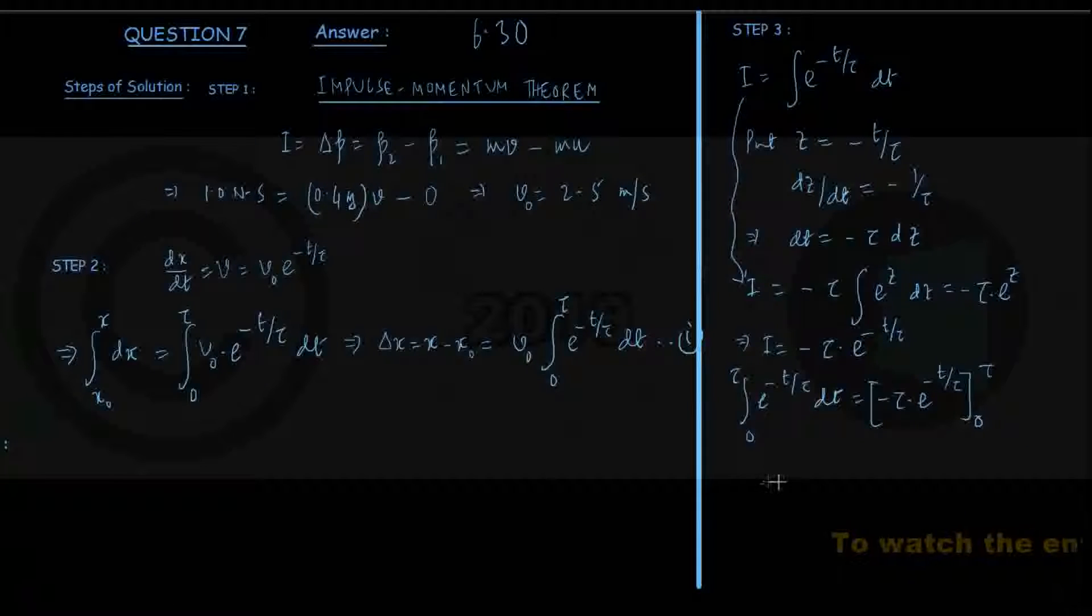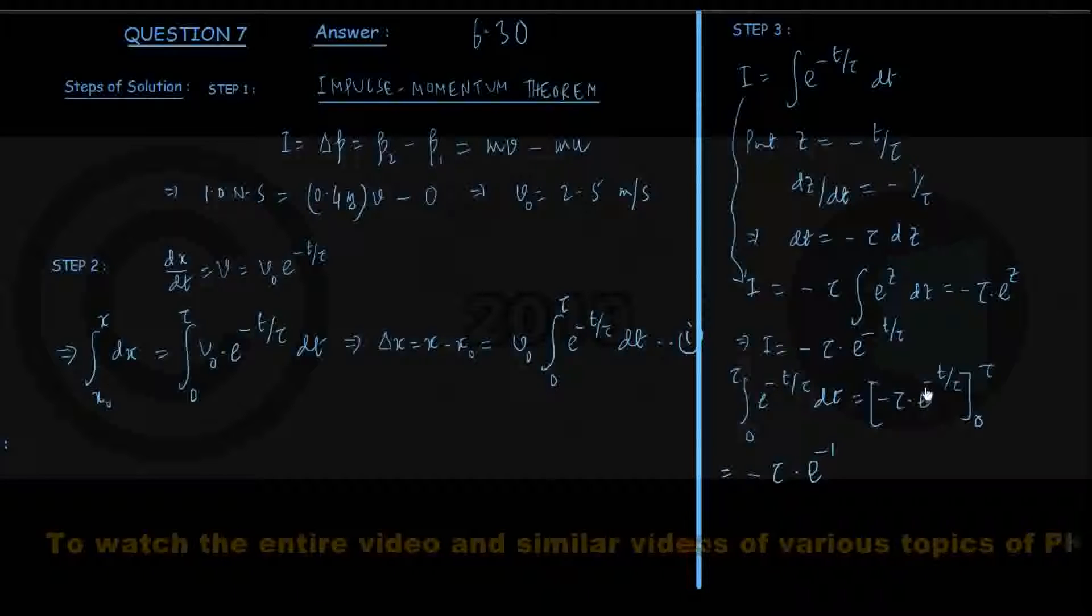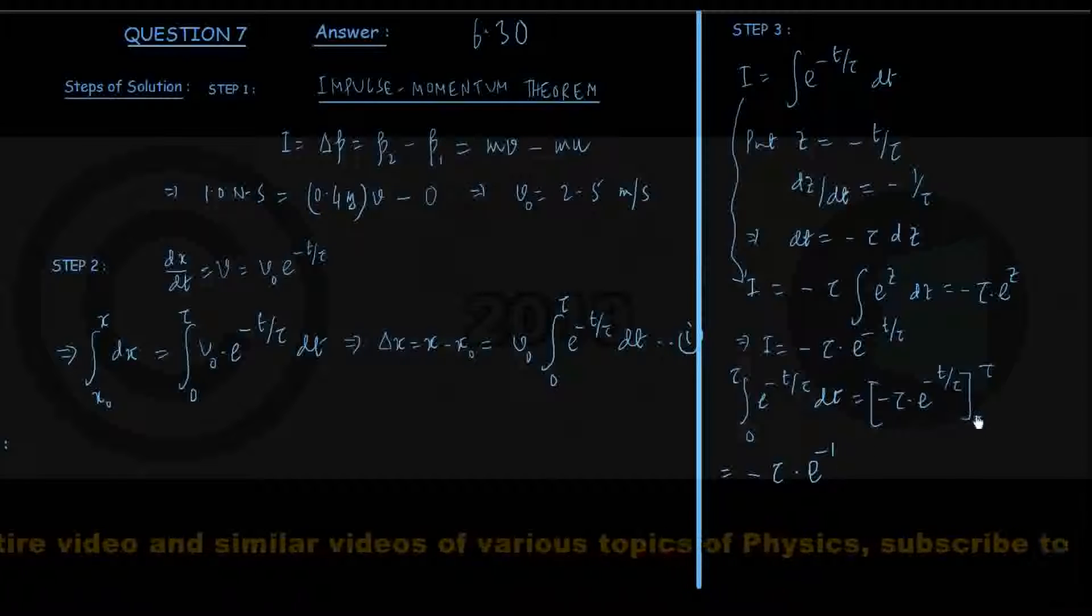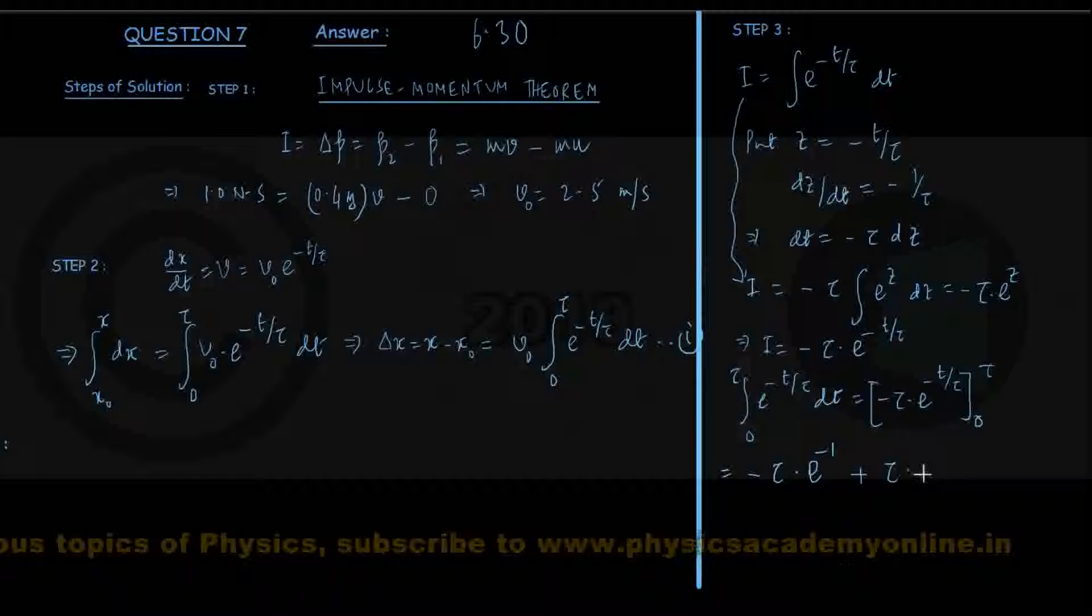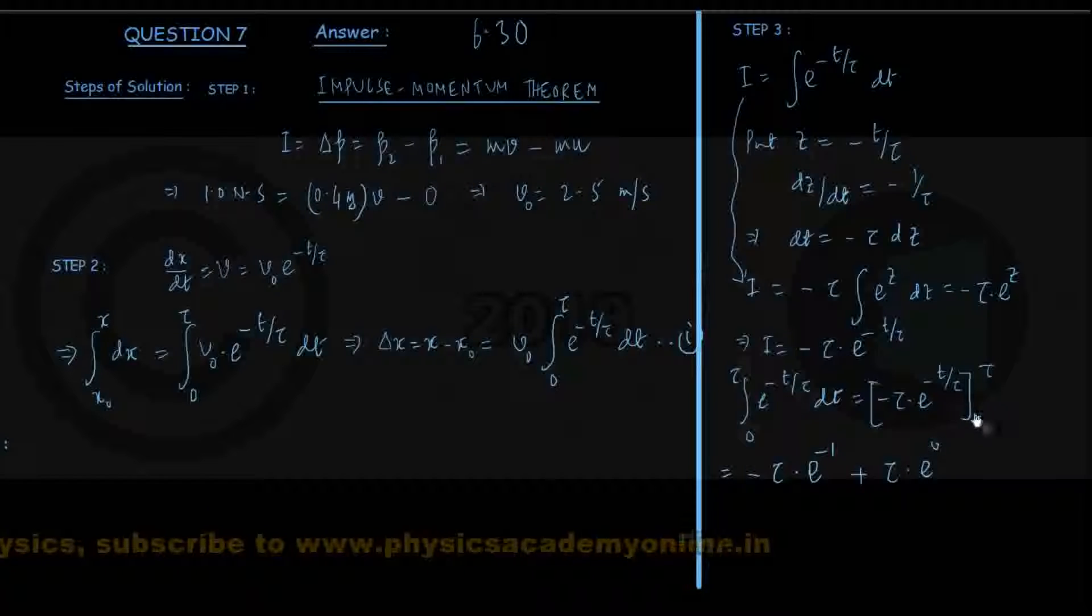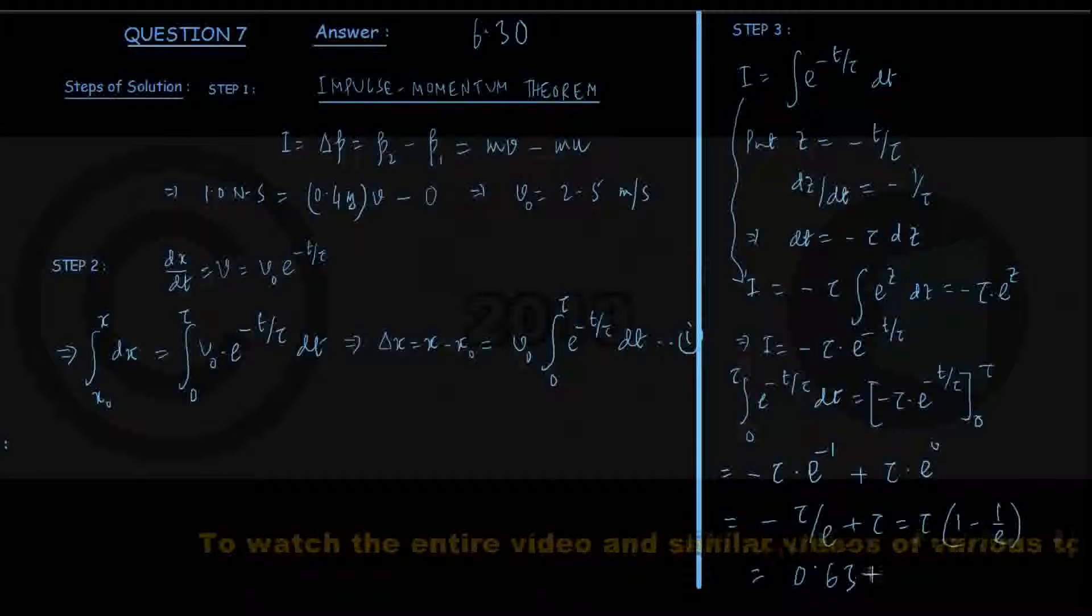Putting upper limit first, we can write this is minus tau times e to the power minus 1. When you put t equals tau, we are getting minus tau times e to the power minus tau upon tau, that is e to the power minus 1. Then putting lower limit minus minus, that is plus tau times e to the power 0. When you put t equals 0, it's coming out to e to the power 0 here. So what is that? This is minus tau upon e plus tau. If I take tau common, we have got 1 minus 1 upon e. In the question, they have given e to the power minus 1 to be 0.37, so eventually coming out to be 0.63 times tau.